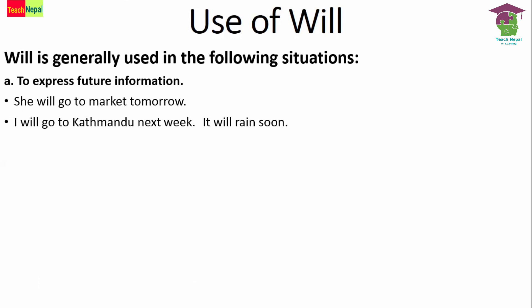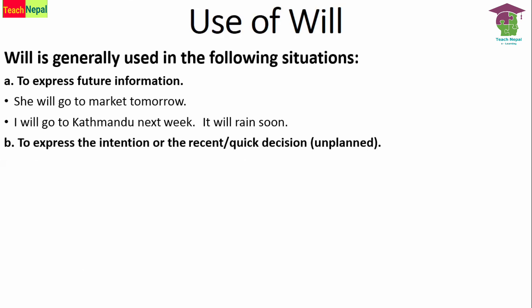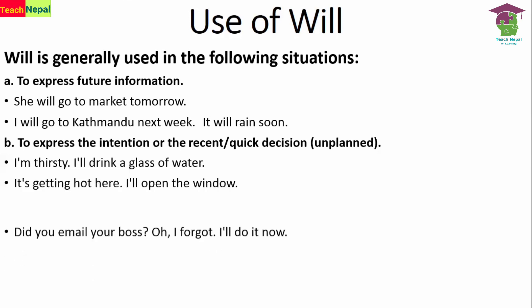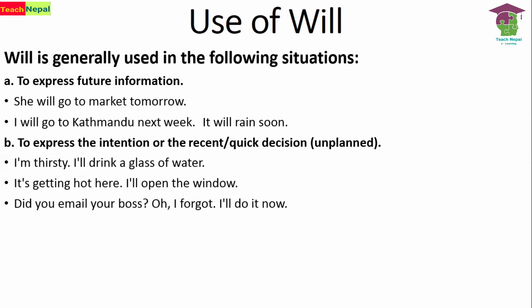The second use of 'will' is to express intention or a recent spontaneous, unplanned decision. For example: 'I am thirsty, I'll drink a glass of water.' 'It's getting hot here, I'll open the window.' 'Did you email your boss? Oh, I forgot — I will do it now.' In these cases, we use 'will' for unplanned, on-the-spot decisions.